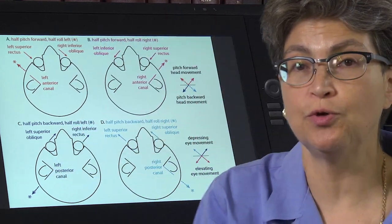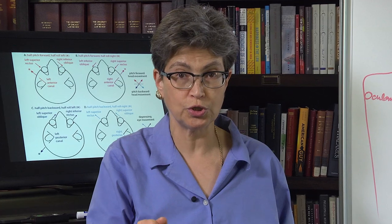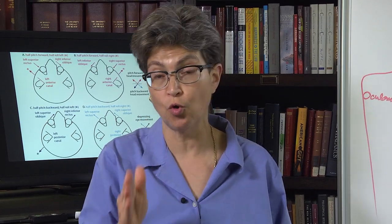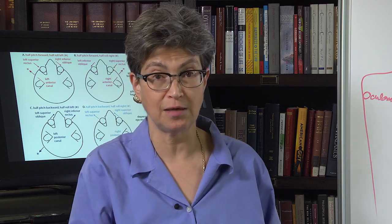So now what we're going to do is now that we understand how the VOR works, we're going to look at the most simple case of the VOR going wrong. The most simple case of nystagmus.